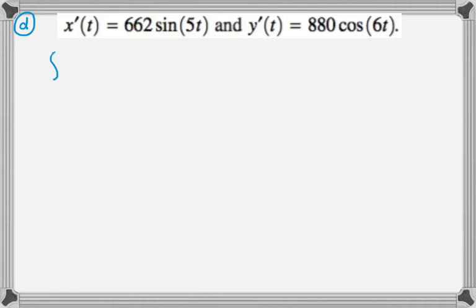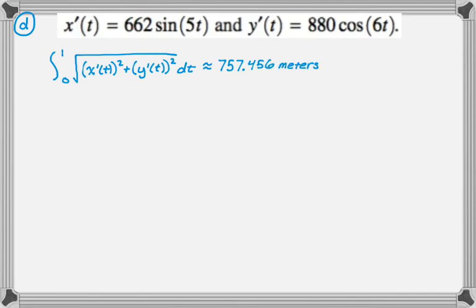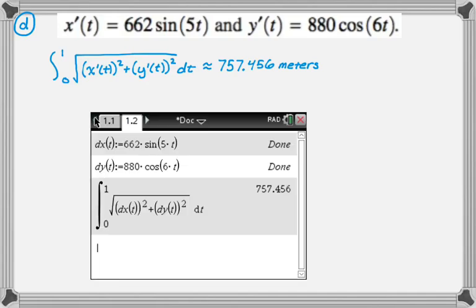That's going to be the integral from zero to one, because that's our time constraint. And then arc length is the square root of x prime squared plus y prime squared. So integral from zero to one, square root of x prime squared plus y prime squared. It's definitely a calculator problem. So we get approximately 757.456, and that's meters. And here's the calculator screen. All right, so that's the entirety of this problem. I hope you found this helpful and good luck.